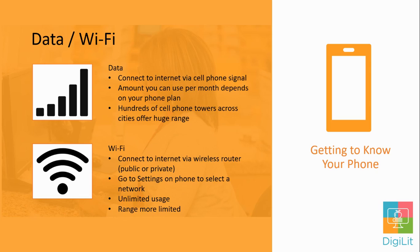When you access the internet from your smartphone, you're either using data or Wi-Fi. Data gives you a connection to the internet from your cell phone signal, so the amount of data you use will depend on what kind of plan you have with your cell phone carrier. With hundreds of cell phone towers across the city, you will have a huge range to get access to the internet.